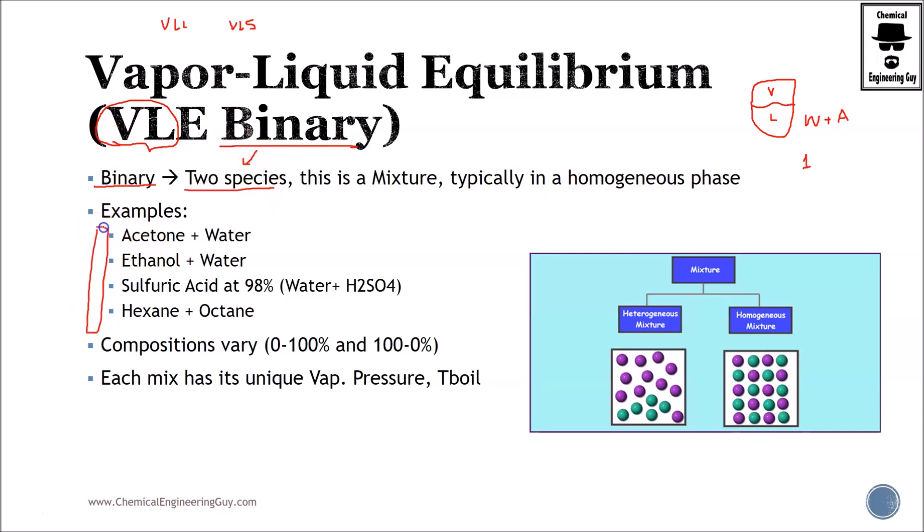Actually, I have a set of examples: acetone-water, ethanol-water, sulfuric acid which technically speaking is a lot of hydrogen sulfate and water, hexane and octane. This is also common, C6-C8 mixture. And as you can see, there are always two species. If you have three species, let's say here we added C7, then we have a ternary system. So ensure to have two species.